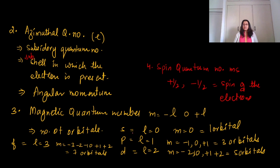For example, if you take s where l equals 0, then m equals 0, and there is 1 orbital present. For p, l equals 1, so m equals minus 1, 0, plus 1, which means 3 orbitals are present. For d, l equals 2, m equals minus 2, minus 1, 0, plus 1, plus 2, so there are 5 orbitals.